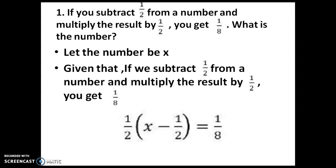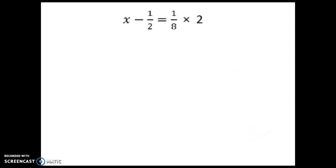Linear equation — as I told in the previous video — x will be a variable with the power of 1. It can be multiplied by any constant and any constant can be added to it. It is of the form ax plus b equal to 0. Not only 0, anything it can be, but it should be in this form only. So let's continue to solve and find out what is x.